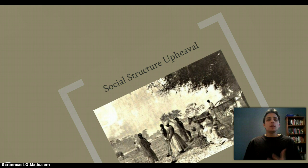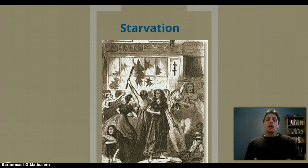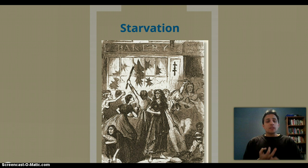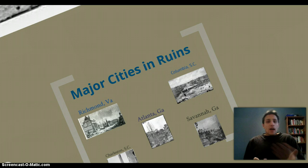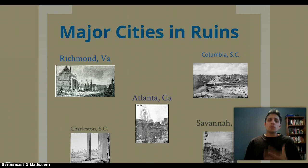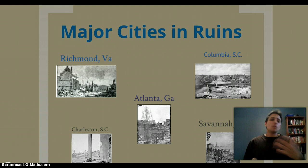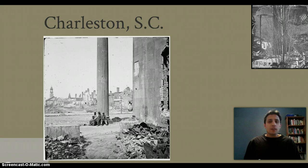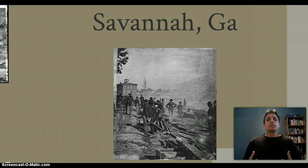Throughout the South, starting during the Civil War and extending into Reconstruction, there is massive starvation. You have major bread riots toward the end of the Civil War when they're running out of food, and this continues into Reconstruction. The South is completely devastated — most of the battles are fought in the South, many towns are burned to the ground. Major cities like Richmond, Virginia; Columbia, South Carolina; Atlanta, Georgia; Charleston, South Carolina; and Savannah, Georgia are in complete ruins, as is the countryside. The South is very much a devastated, destroyed region.